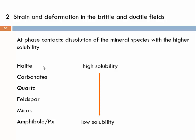Carbonates — and you know from karst features that might form caves — have also very high solubility. Acidic water can easily dissolve carbonates near the surface at low temperatures, and at higher temperatures the dissolution will be even more effective. Amongst the silicates, quartz has the highest solubility — higher than feldspar, micas, amphiboles, or pyroxenes.